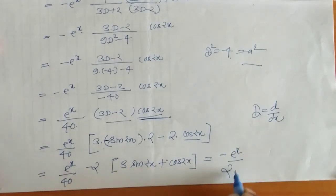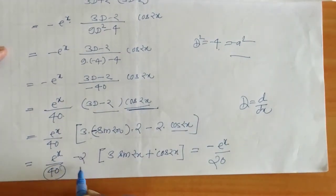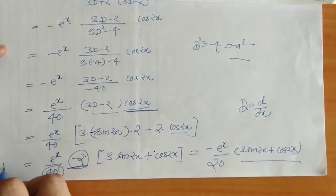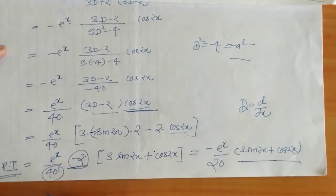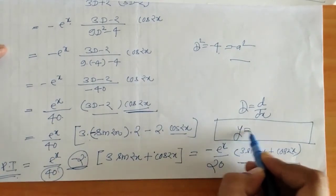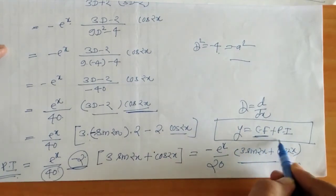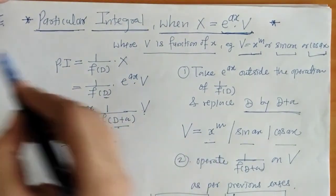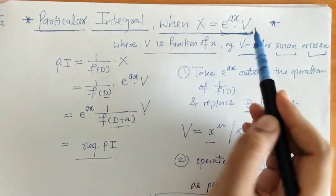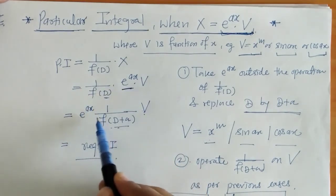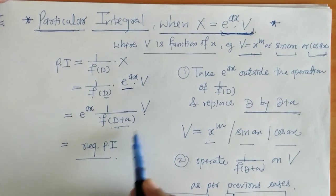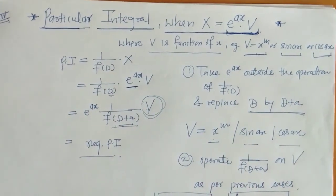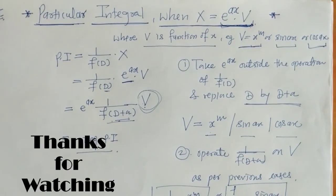So we get the required PI as minus e raised to x upon 20, multiplied by the expression. In this way we got the required PI. The complete solution is y equals CF plus PI. We put in the values of CF and PI. That's it for now — see you in the next video, thank you, keep watching.